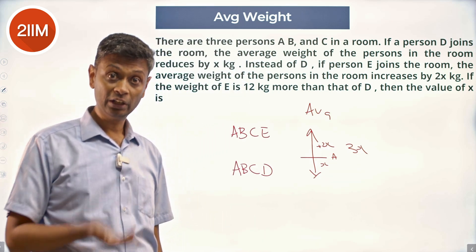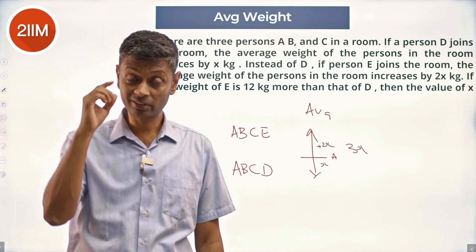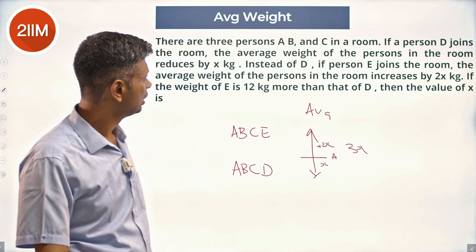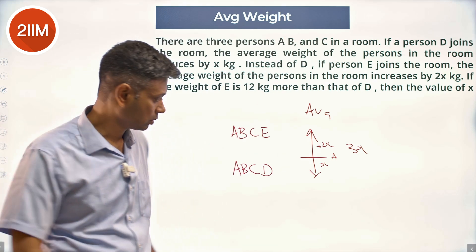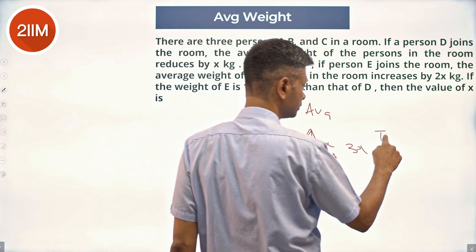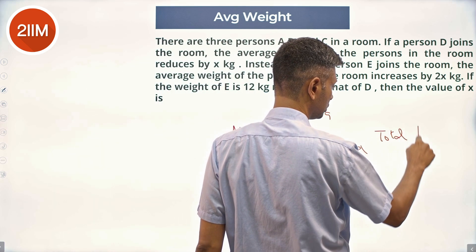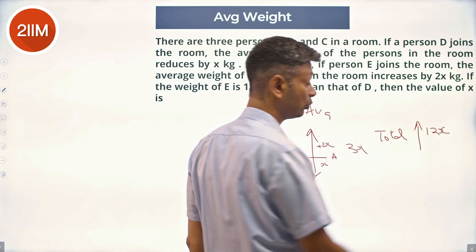Instead of D, I bring in E and the average goes up by 3x. Average is up by 3x over 4 people, so the total is up by 12x - that's 3x times 4.